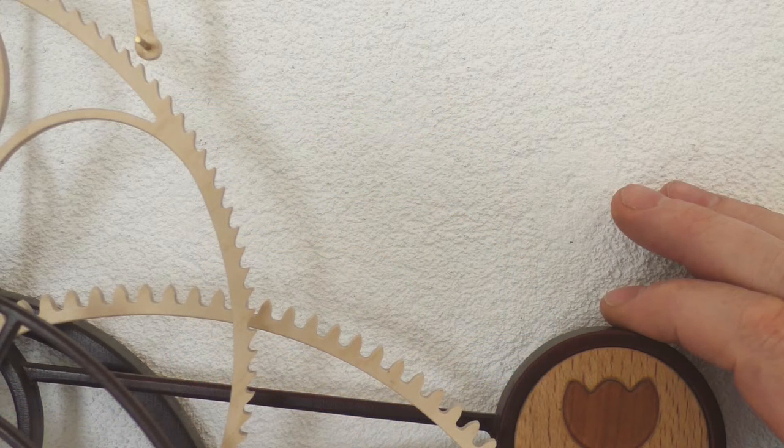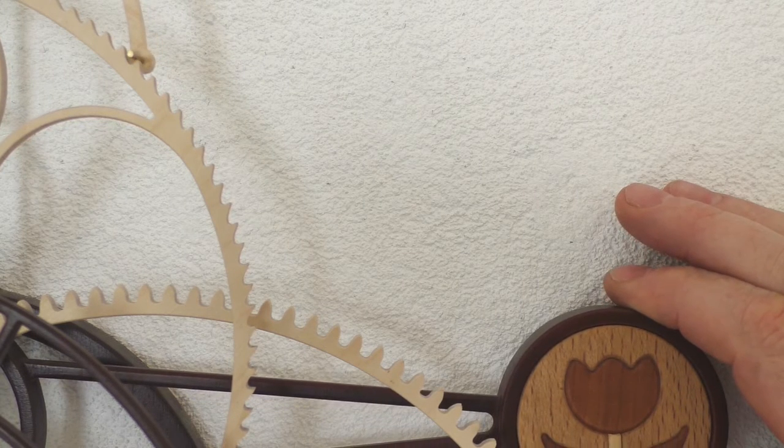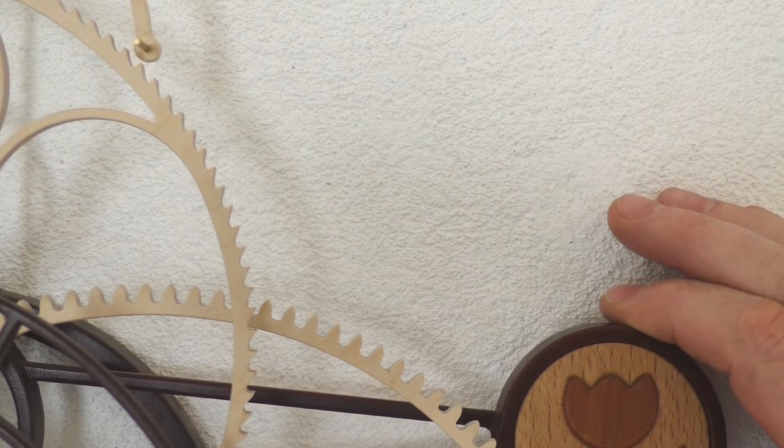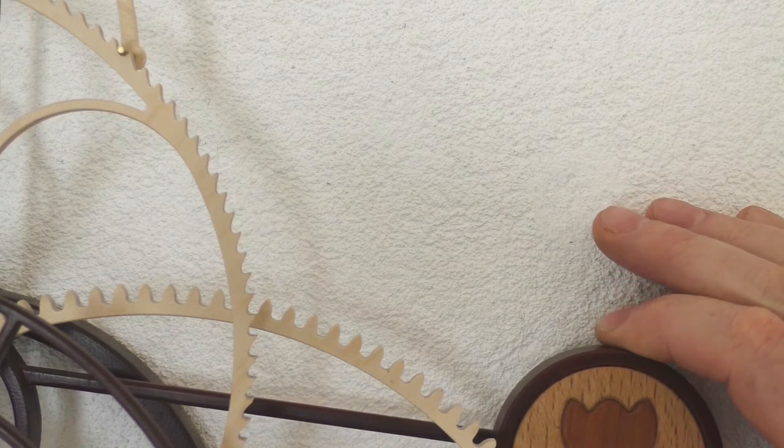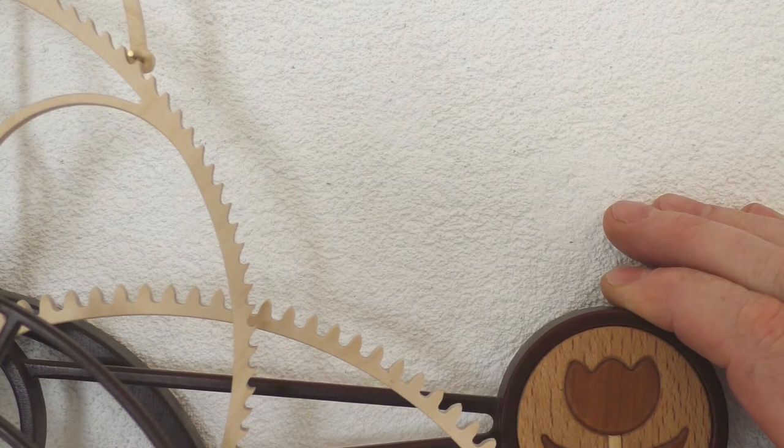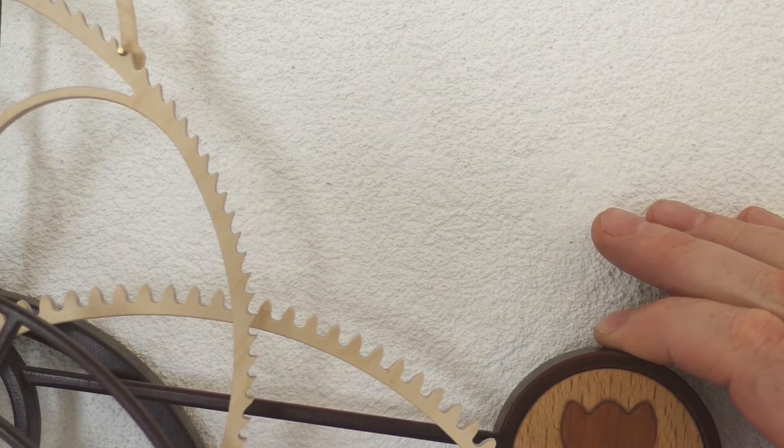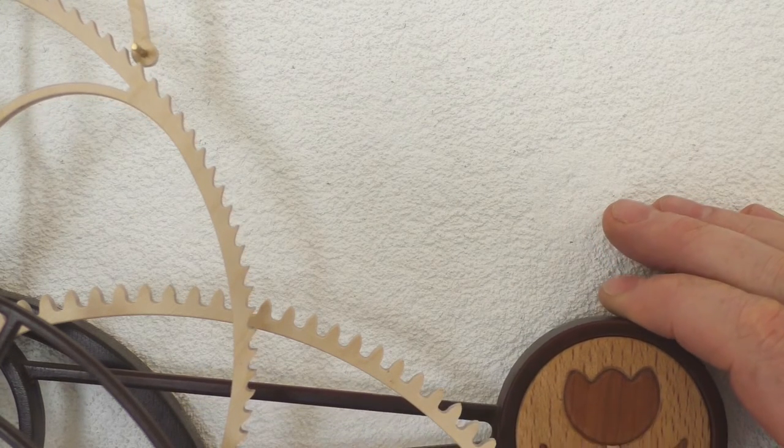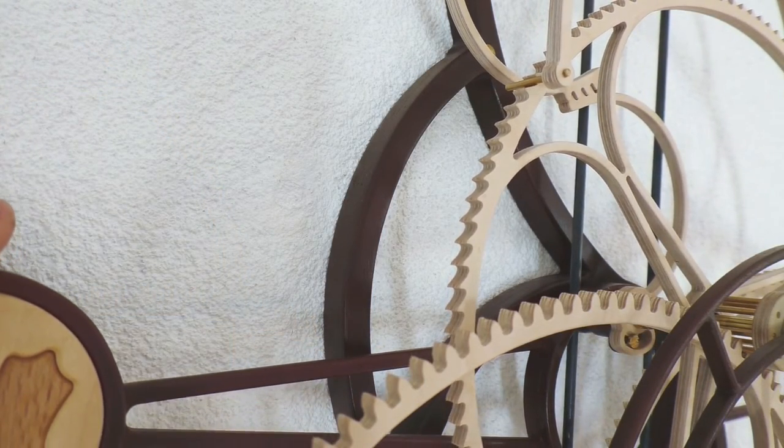So I am going to start by showing you how the pallets should engage with the escapement wheel. The pull pallet is engaged and I am just moving the pendulum up and down so I can see exactly where the pin on the push pallet hits the wheel. As you can see, it falls directly into the tooth without touching its sides and it slowly and gently disengages. Here it is exactly the same for the pull pallet.